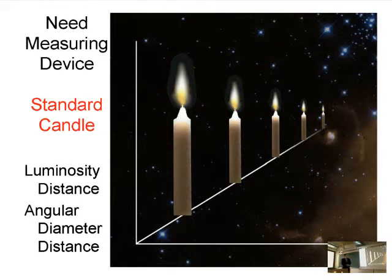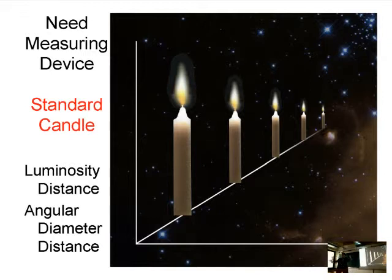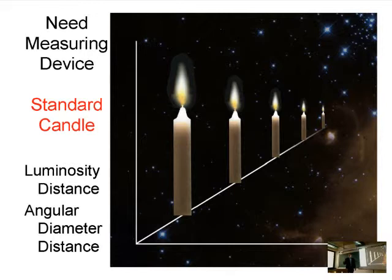We need a measuring device, and here is the concept: the standard candle. Imagine you bought a bunch of identical candles, set them on fire at the same time, and spaced them out in the distance. You would see two things: the brightness of the flame drops off as one over the distance squared, simply because light spreads uniformly on a sphere whose area goes as 4πr². You would also see the angular size decrease linearly with distance. So there are two ways to measure distance from a true standard candle: measuring the luminosity distance, where brightness drops as one over distance squared, or the angular diameter distance, where angular size drops as one over distance.